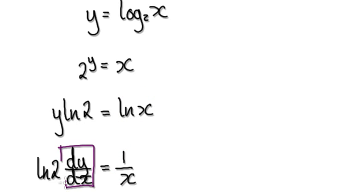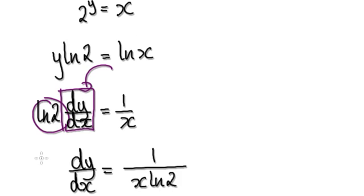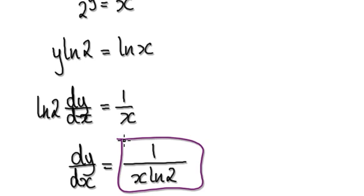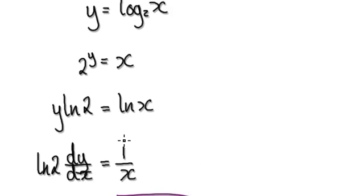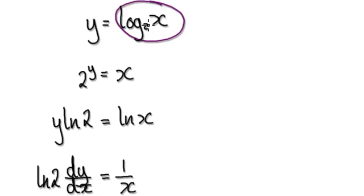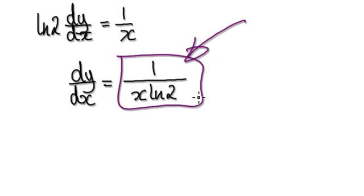So now it's dy/dx that you want on its own. Divide both sides by natural log of 2, and that will then give you this. So when you differentiate this, it will give you this.